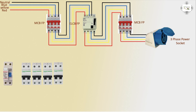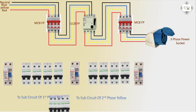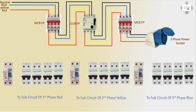For the MCB four-pole, first phase uses red wire connection through ELCB, second phase uses yellow, and third phase uses blue. The first red connection goes to the ELCB positive first phase input.